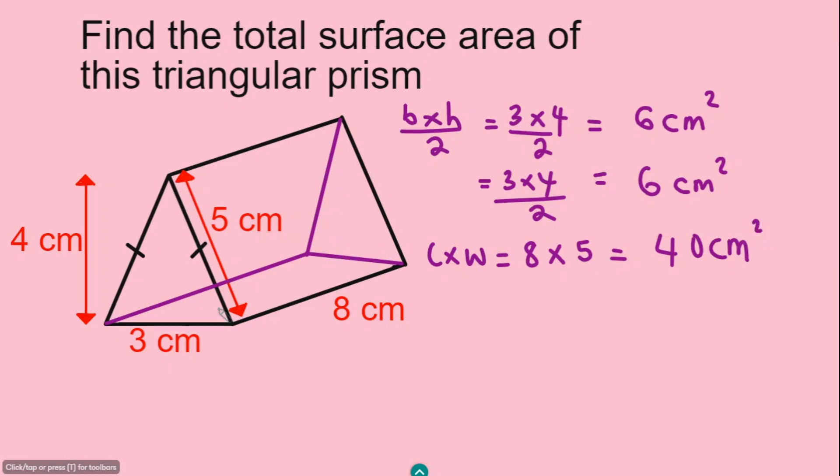And now, because this triangle here is an isosceles, this length here is equal to this length. So if you look at the rectangle at the back, you can find the width is 5 and the length is 8.